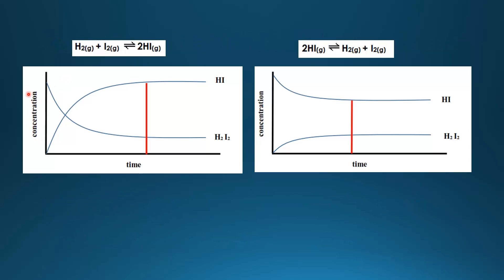Here we have two graphs of concentration against time. The graph on the left shows the reaction of hydrogen and iodine to make hydrogen iodide. Initially the concentration of hydrogen iodide is zero and it increases, while hydrogen and iodine start at a higher concentration and decrease. The red line indicates the point where equilibrium has been reached and the concentrations become constant.